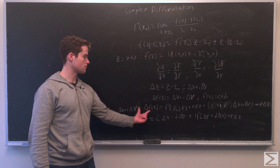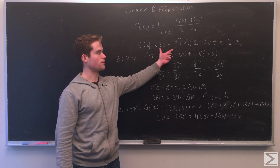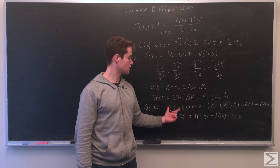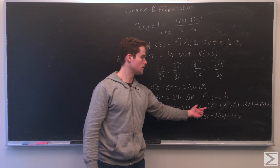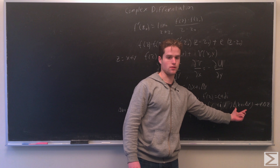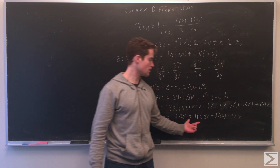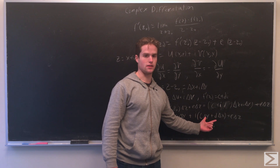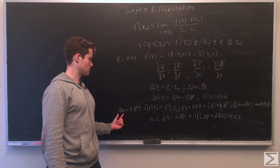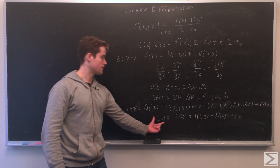Writing out delta f(z): delta u plus i delta v equals delta f(z), which using our slightly modified form that implies a derivative, gives us f prime(z0) times delta z plus epsilon delta z, equals c plus id times (delta x plus i delta y), which is just delta z. Expanding into real and imaginary parts, we have c delta x minus d delta y plus i(c delta y plus d delta x) plus epsilon delta z.